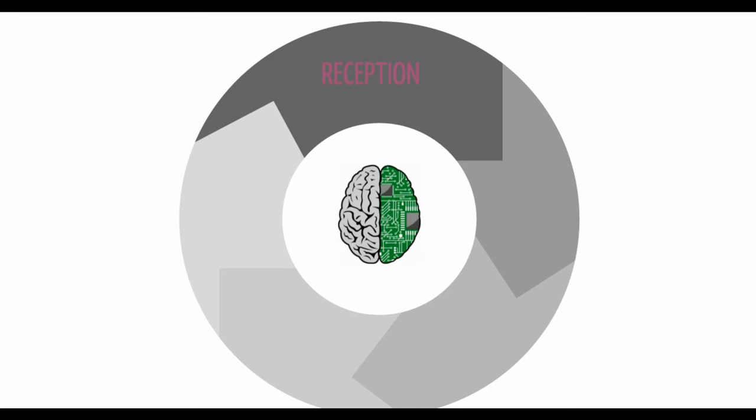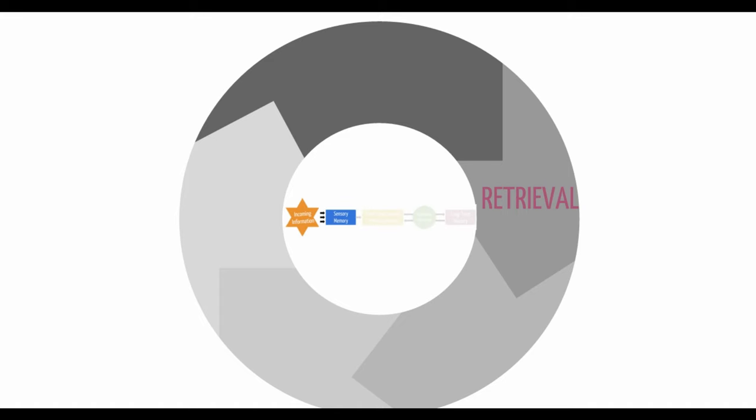I'll begin with reception, which was represented by the pulsing brain and unusual audio sounds. Next, retrieval was encouraged through a quick walkthrough of the information processing model learned previously, to pull this information from your long-term memory into your working memory.